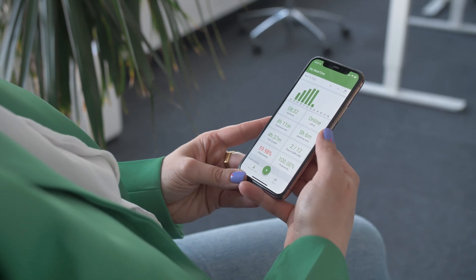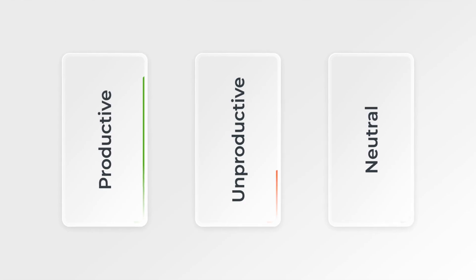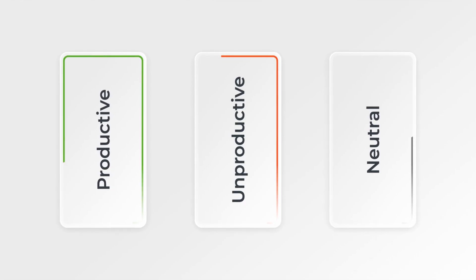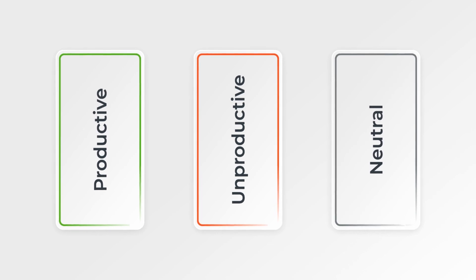You can use Desktime via your desktop, the mobile app, or simply a browser. When activated, Desktime registers the time you spend on the computer and analyzes these periods as productive, unproductive, or neutral.